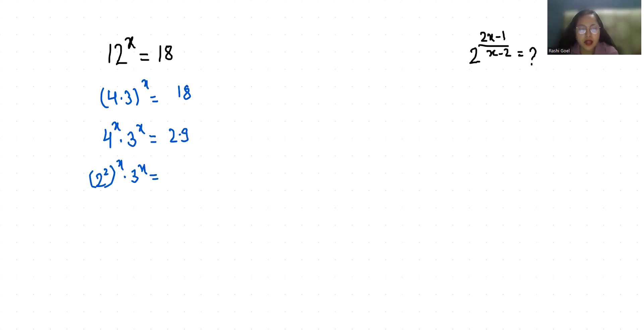So now according to exponent rule, x power n power m equals x power n times m. We can write this as 2 power 2x times 3 power x equals 2 times 3 power 2.